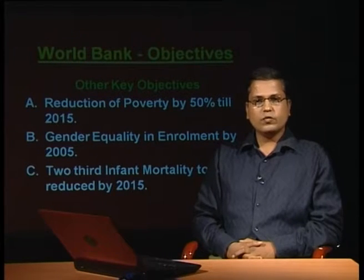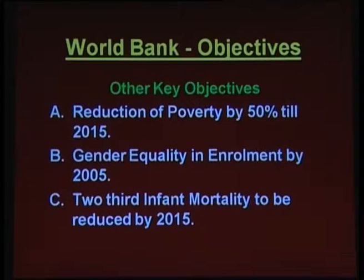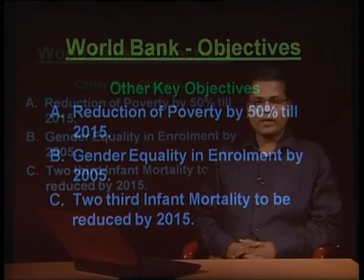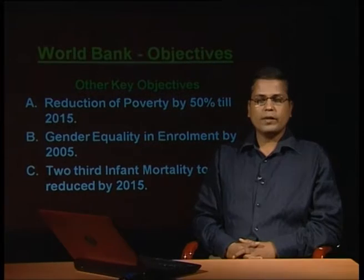These objectives were decided in the United Nations Millennium Development Plan. These objectives are: reduction of poverty by 50 percent till 2015, gender equality in enrollment by 2005, and two-thirds infant mortality to be reduced by 2015. These are socio-economic objectives of World Bank, closely associated with the United Nations Millennium Development Plan.